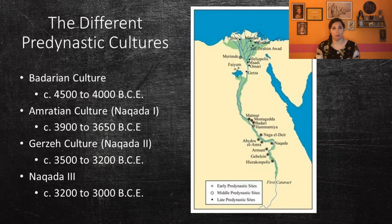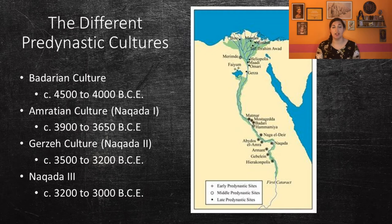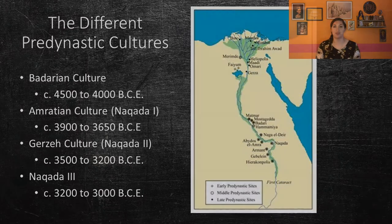We're going to be talking about four main cultures: the Badarian, the Emration, the Gerzen, and Naqada. The Emration and Gerzen cultures are also called Naqada I and Naqada II, because Egyptologists have now related all three cultures together in a chronological order. Unfortunately, we're not going to be able to cover all of the different cultures from pre-dynastic Egypt, but I encourage you to learn more.